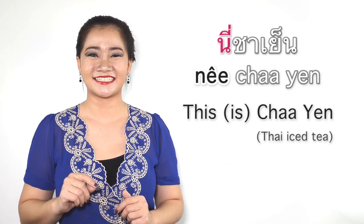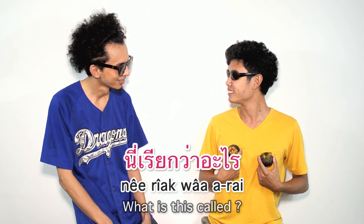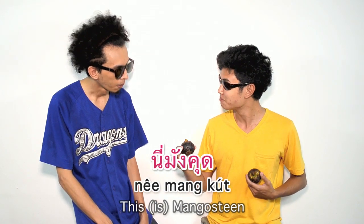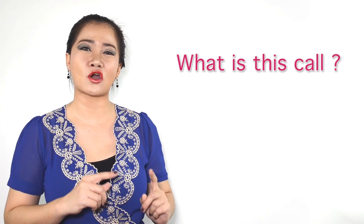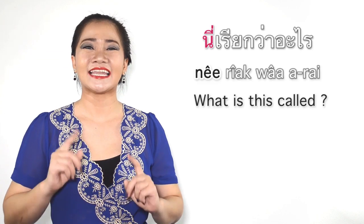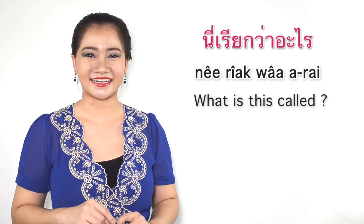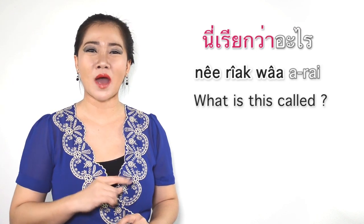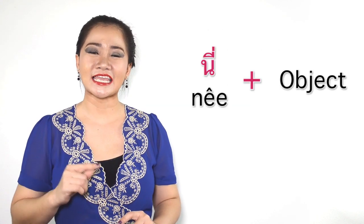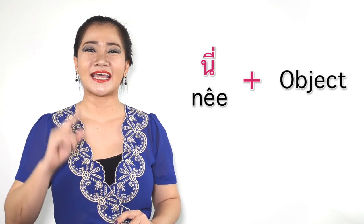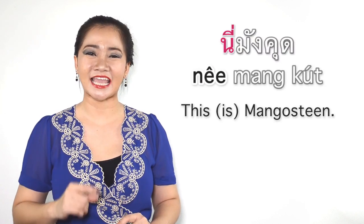To be more specific with your question, what is this called in Thai, we say เรียกว่าอะไร. To answer this question, just use นี่ followed with the object. So, นี่มังคุด - This is mangosteen.